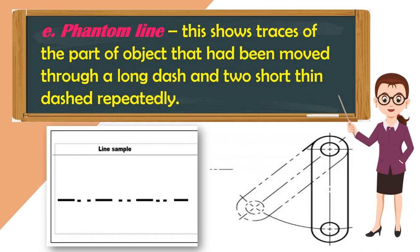The last alphabet of lines is the phantom line. The phantom line shows traces of the part of an object that has been moved, represented by a long dash and two short dashes repeated alternately.